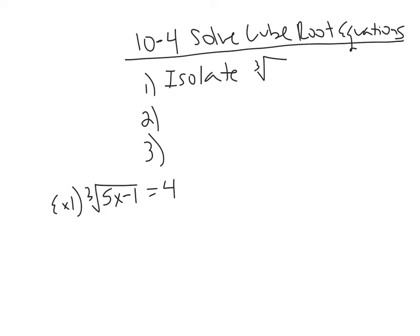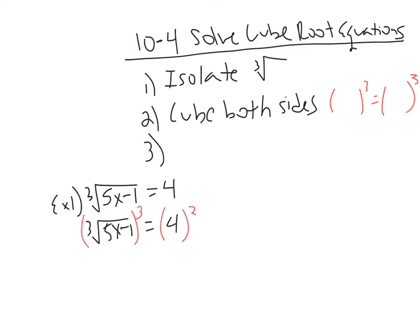Well, what is the opposite of cube rooting a side? Well, that would be to cube both sides. So we're going to cube both sides. Well, what does that mean? That means that whatever's on the left I can do as long as I do it to the right. So we're going to take our cube root 5x minus 1 and I'm going to raise this to the third power, and I can do that as long as I raise the right hand side to the third power.